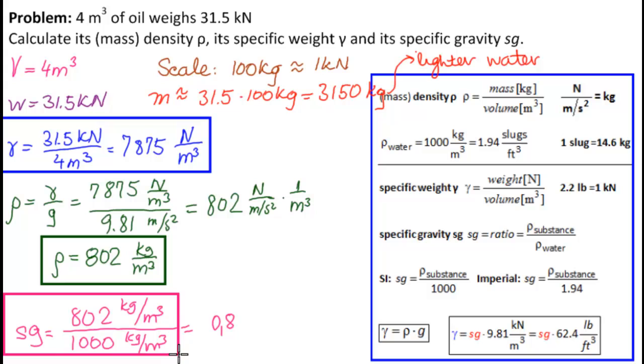Okay. So, this is the answer to the third part of the problem. No units. 802 kilograms per meters cubed, that's good for density. Newtons per meters cubed, that's good for specific weight. Everything is in good shape.